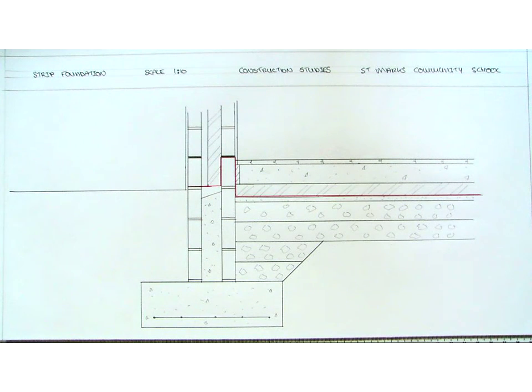So that is our strip foundation with a 350mm cavity wall placed on top with all the necessary floor details. Now it is also important to indicate on our drawing all the various measurements and names of the components.